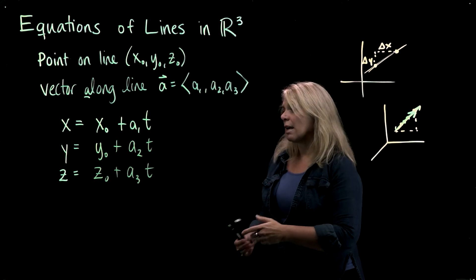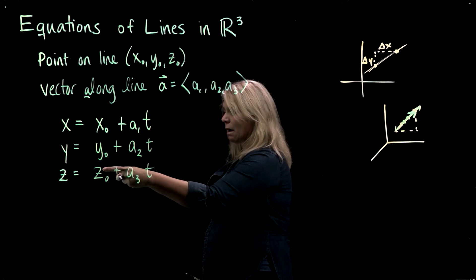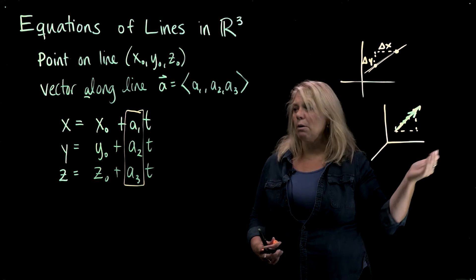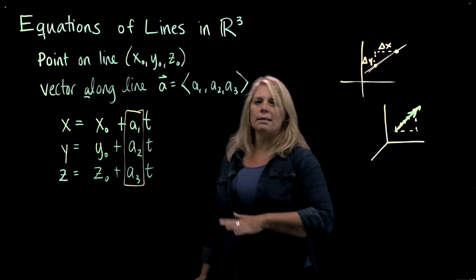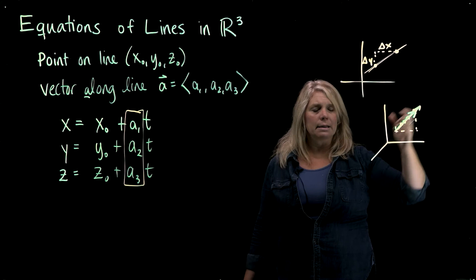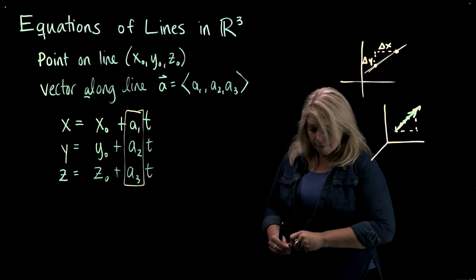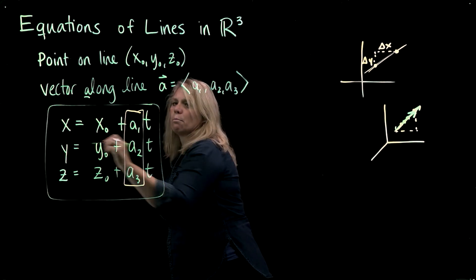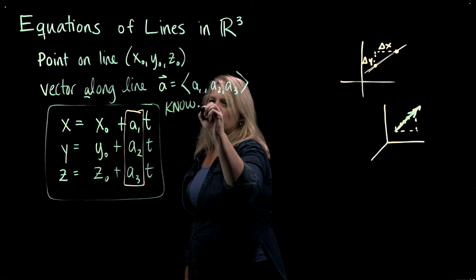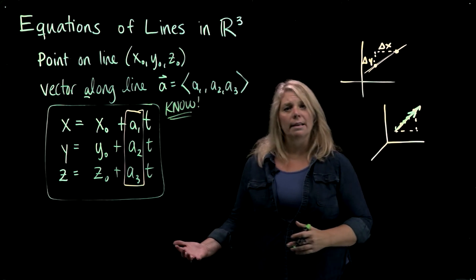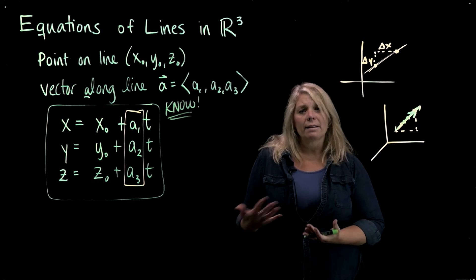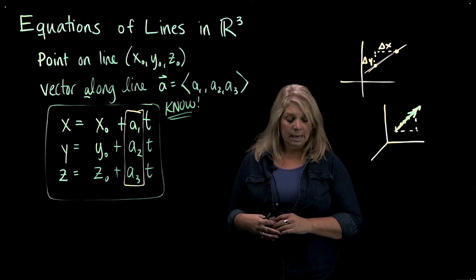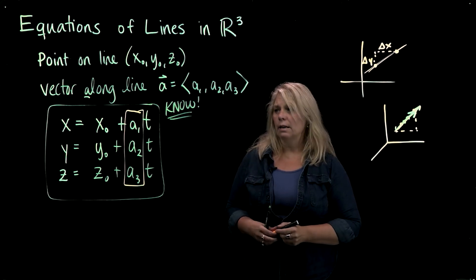So what I have here: the initial point x₀, y₀, z₀, and then the coefficients of t are the components of the direction vector that tell me where to go. The parameter t acts like a scalar multiple giving more points in that direction. This is a format you want to make sure you know — you'll use it at different points throughout the semester, so make sure you understand it, not just memorize it.